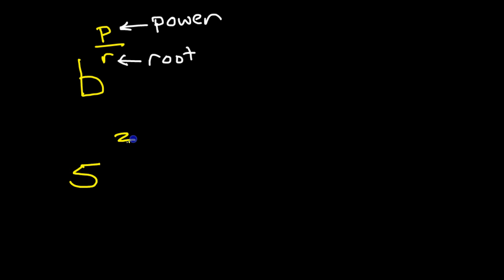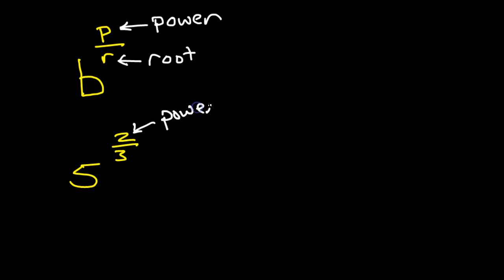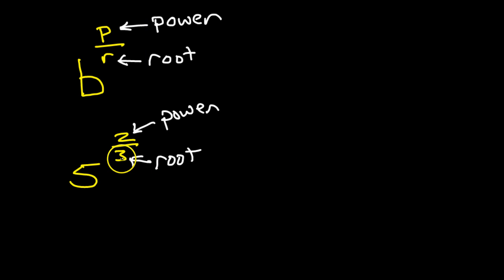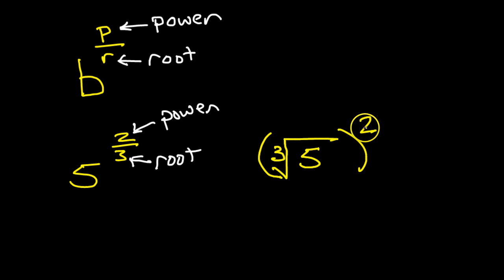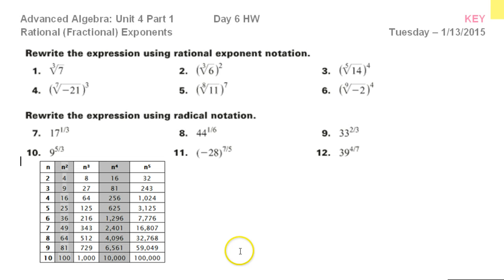For example, if you have something like 5 to the 2/3 power and want to rewrite this in radical form, 2 is the power and 3 is the root. Starting with the 5, since 3 is the root we're dealing with a cube root — cube root of 5. Now 2 is the power, which I can put on the outside. The power goes out there, and then the root.